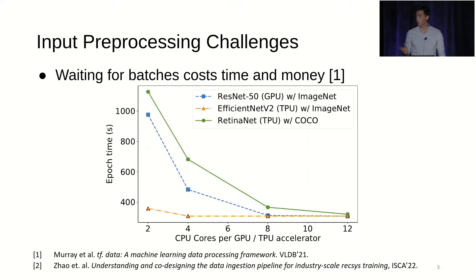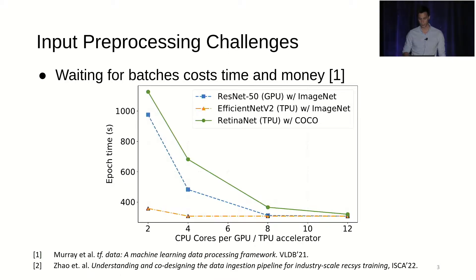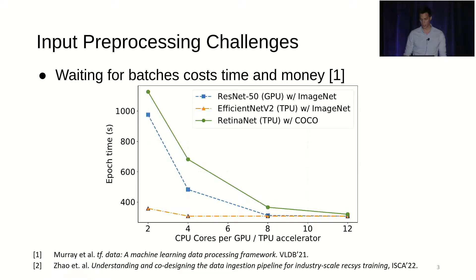To show how important input pipeline resources are for ML workloads, I have a few curves here showing how the epoch time progresses as you change the number of CPU cores per GPU and TPU accelerators for a few models. The green and blue curves — RetinaNet and ResNet — show how much the epoch time changes as you change the resources.